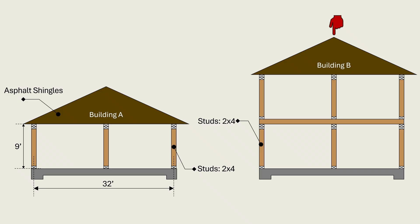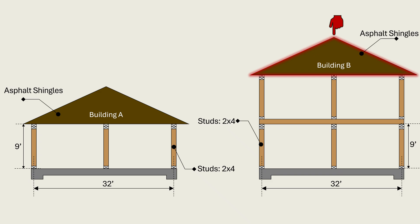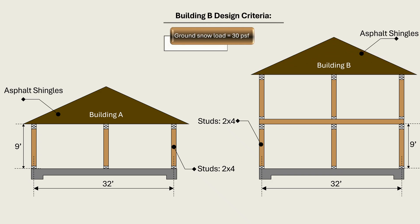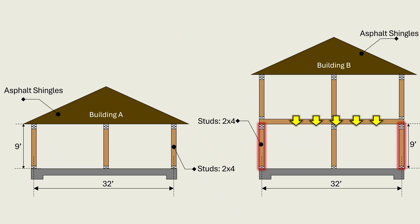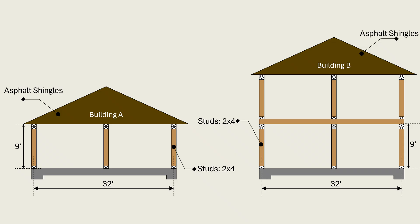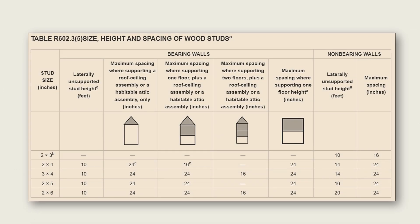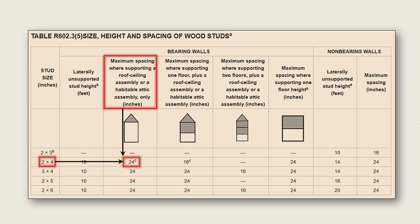Building B is a two-story building with 9-foot tall exterior bearing walls and a total building width of 32 feet. The roof is conventionally framed and finished with asphalt shingles, located in a region with a ground snow load of 30 pounds per square foot and a roof live load of 20 pounds per square foot. Since Building B is a two-story building, the exterior walls at the first floor support a full floor system in addition to the roof-ceiling assembly above. Just like Building A, the laterally unsupported stud height is 9 feet, which remains within the table's 10-foot maximum limit. For Building A, the studs carry only the roof-ceiling assembly, and the stud design table permits a spacing of 24 inches on center for 2x4 studs.